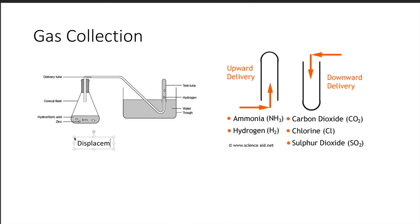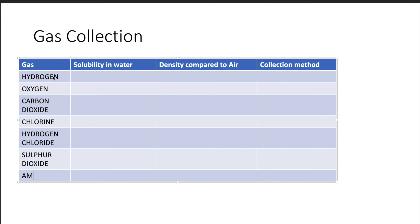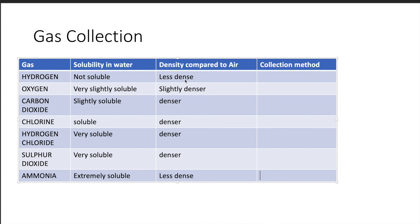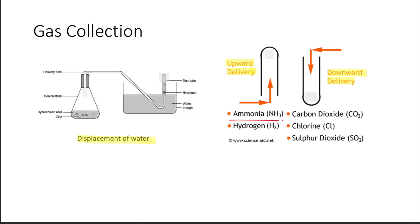For collecting gases, there are three methods: displacement of water for gases that are not soluble in water; downward delivery for gases more dense than air, which will sink; and upward delivery for gases less dense than air, which will float. For example, ammonia is a basic gas, soluble in water, and less dense than air, so you must use upward delivery. You cannot use displacement of water because it's soluble, and you cannot pass it through acidic material because it's basic and will react with acid.